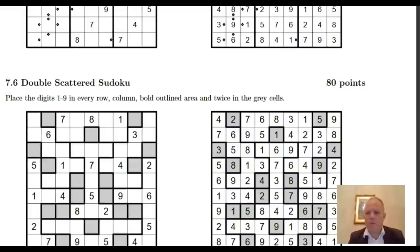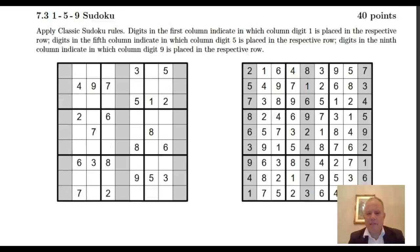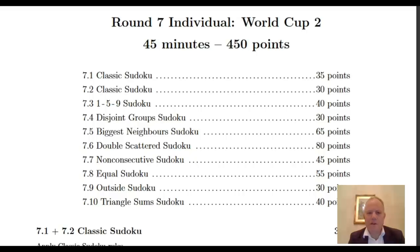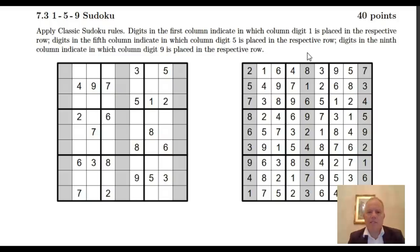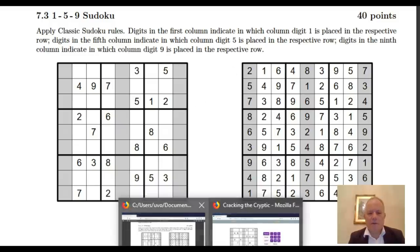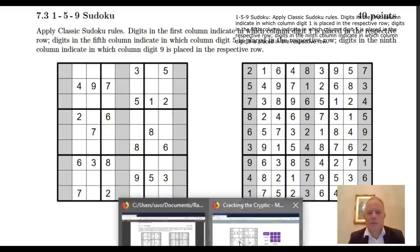We're going to go back to the first variant they listed, that's the 1-5-9 Sudoku. Digits in the first column which is gray indicate in which column digit 1 is placed in that respective row. Digits in the fifth column indicate where you find digit 5 in that row, and digits in the ninth column show where digit 9 is in that row.